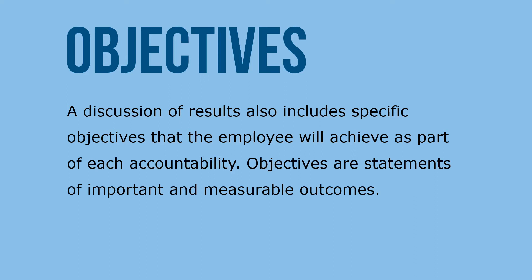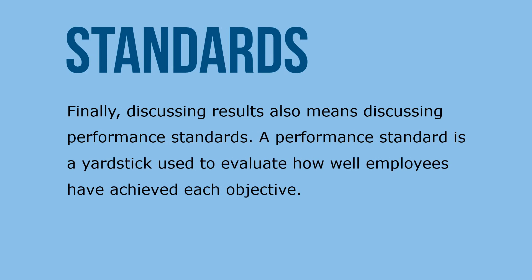A discussion of results also includes specific objectives that the employee will achieve as part of each accountability. Objectives are statements of important and measurable outcomes. Finally, discussing results also means discussing performance standards — a performance standard is a yardstick used to evaluate how well employees have achieved each objective.